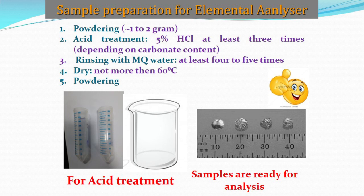For the elemental analyzer we can analyze either hard rock samples or soft sediment samples, and even leaves of plants or other substances. For rock or sediment samples we first homogenize the samples and take one or two grams of raw sample and powder it. After powdering we treat those samples with 5% HCl three or four times depending on carbonate content. After removal of carbonate we rinse those samples with Milli-Q water at least five times to remove acid and soluble salts. After that we dry those samples and again powder them to remove lumps.